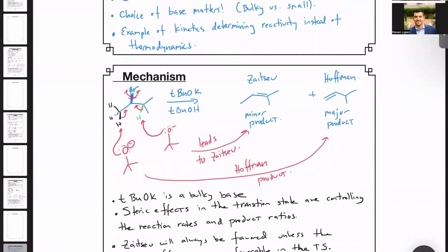So finally, the Zaitsev product will always be favored unless the steric effects become unfavorable in the transition state as we see in this.